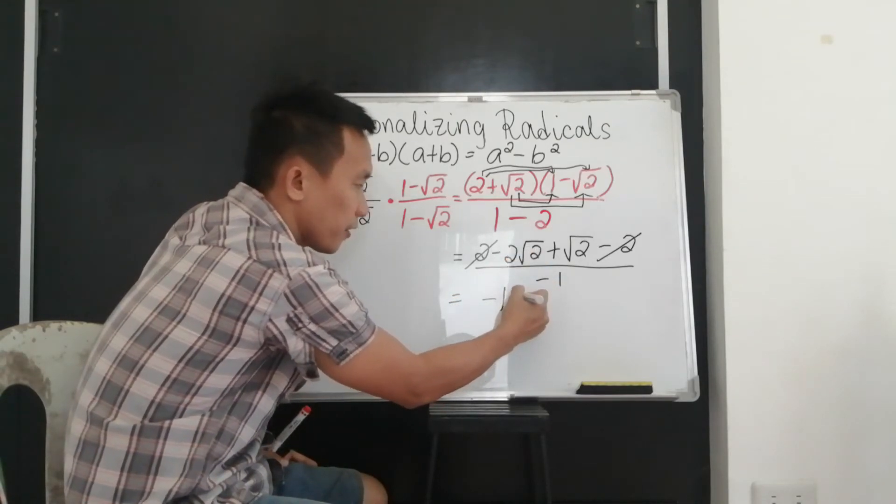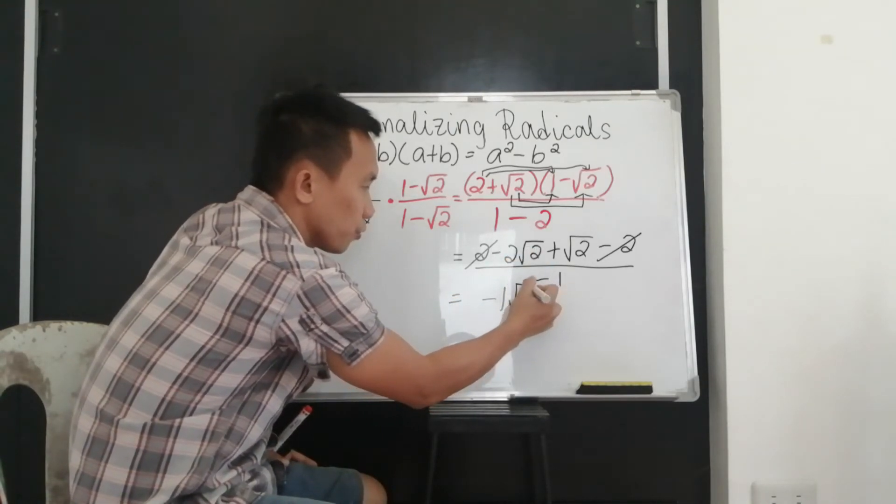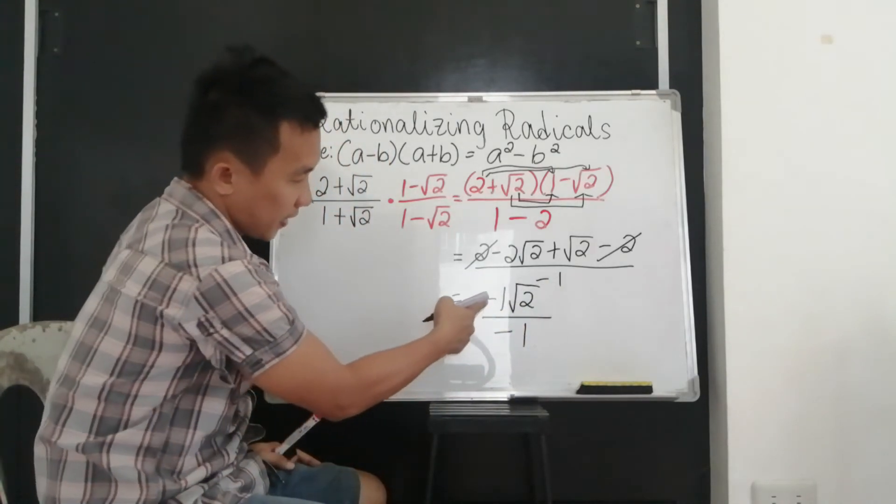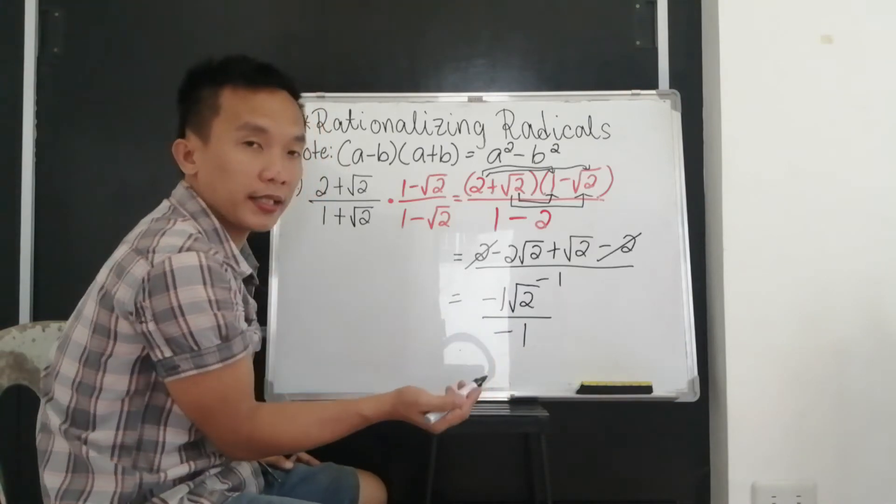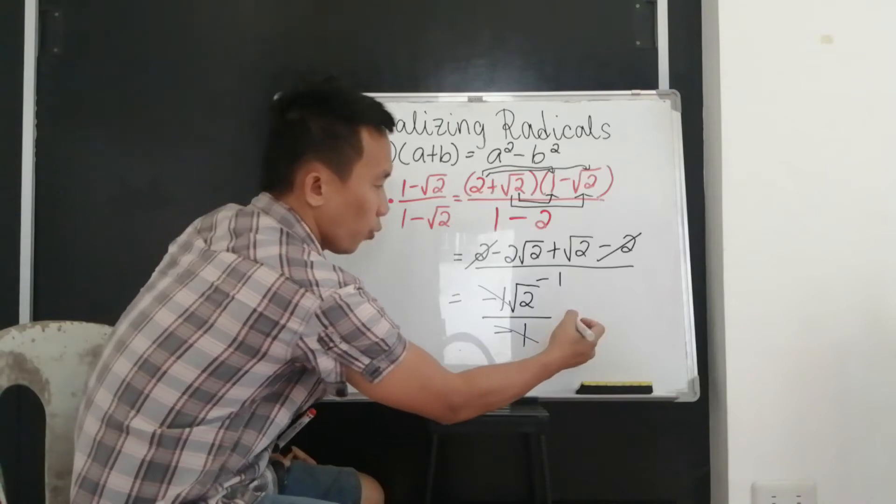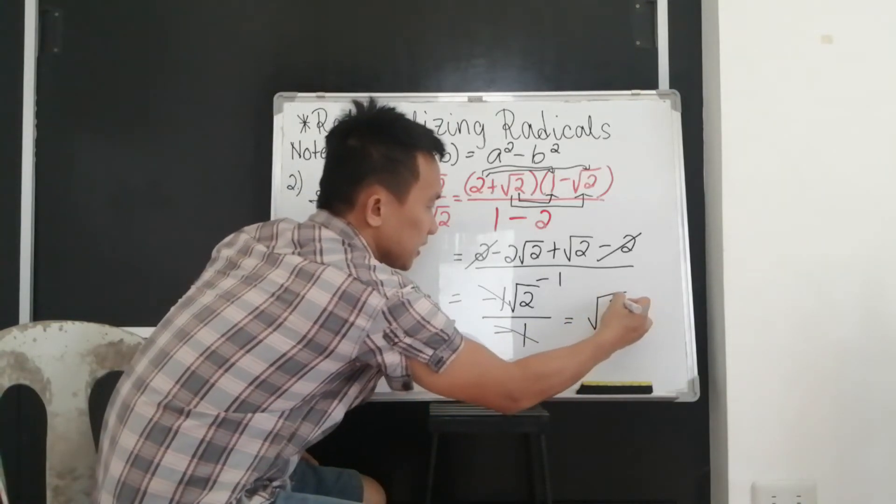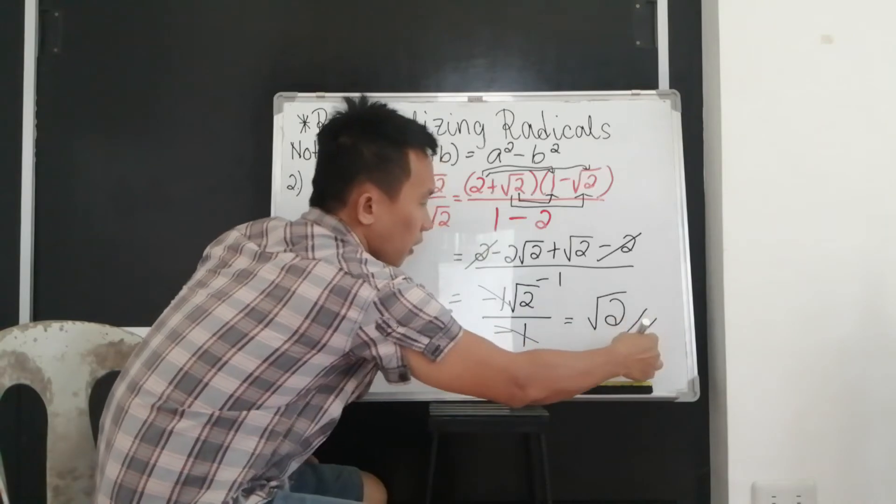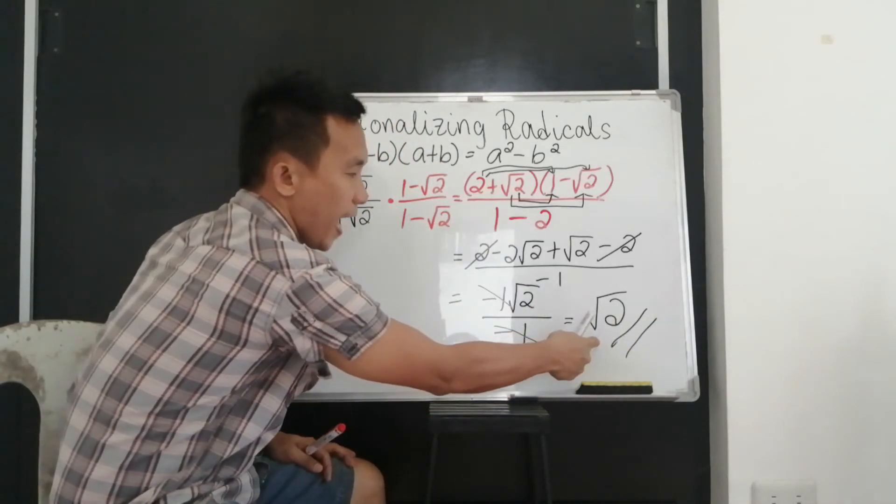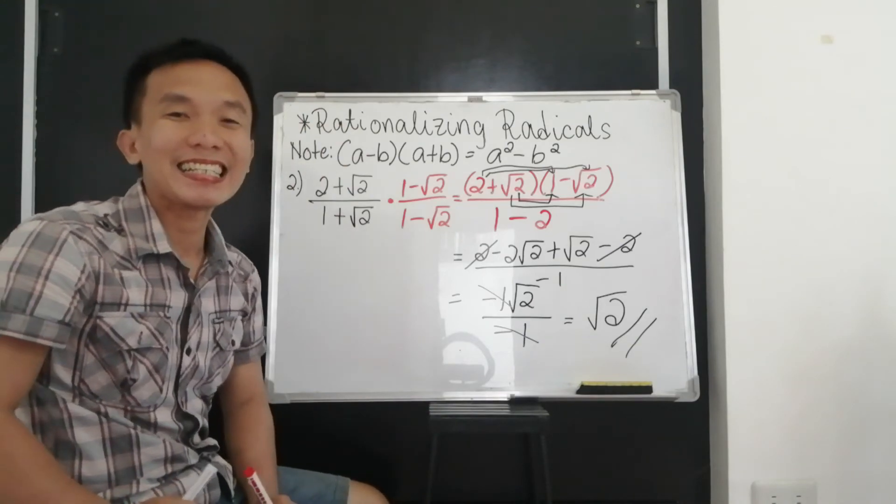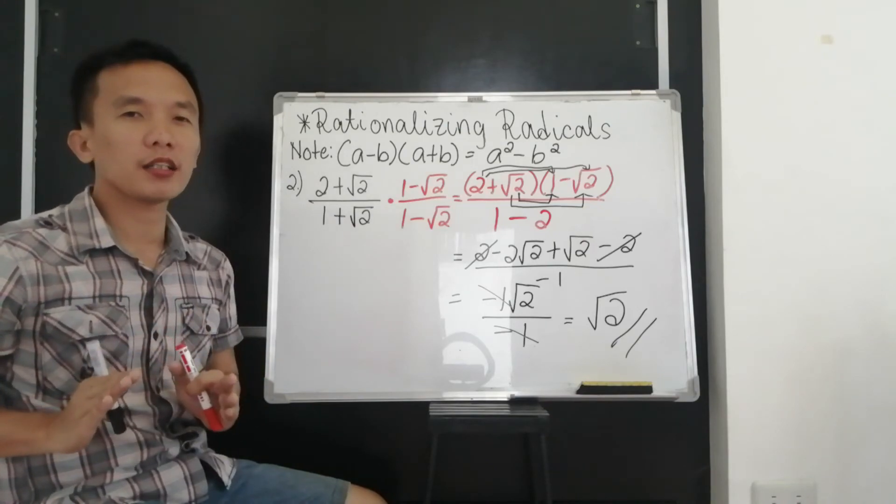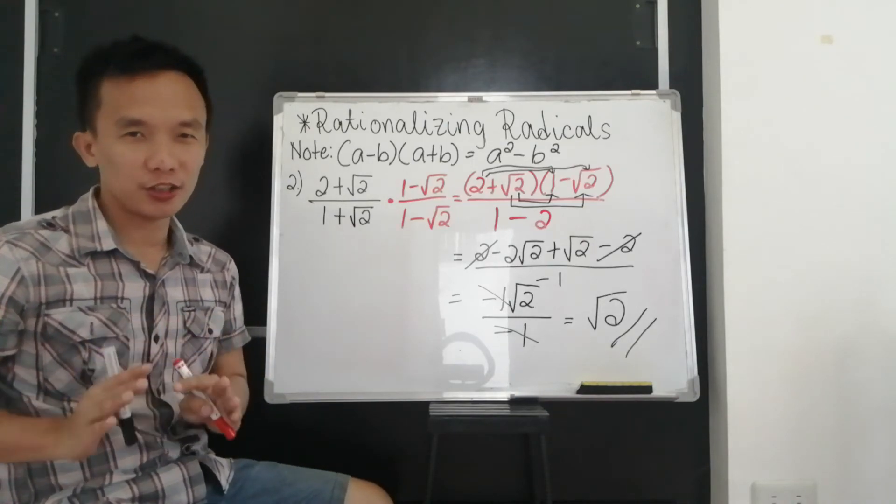Then copy your square root of 2. All over negative 1. So, negative 1 divided by negative 1, that will be cancelled. So what will remain is just the answer, square root of 2. So this binomial, the answer is only square root of 2. So that is how you are going to solve that conjugate.